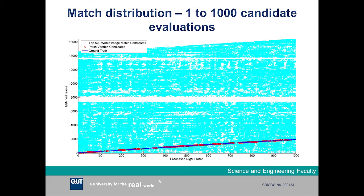It's also interesting to note that there are approximately 500,000 candidate match hypotheses output by stage one of the system. Stages two and three are able to correctly pick out 510 of the correct match hypotheses while ignoring almost half a million of the incorrect match hypotheses.